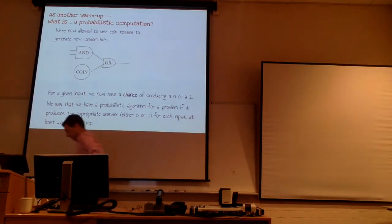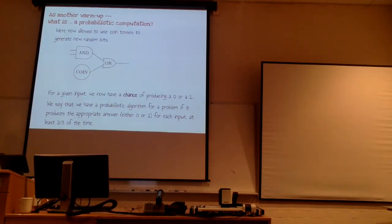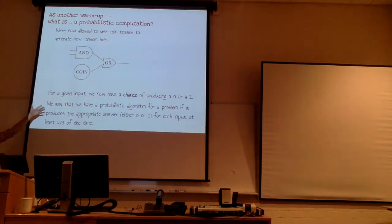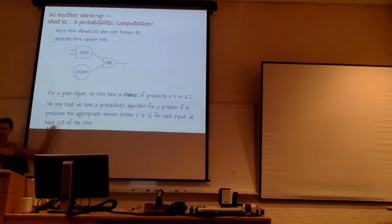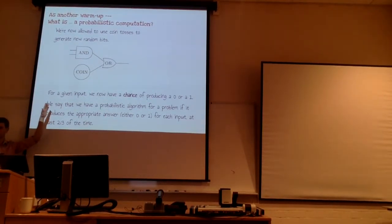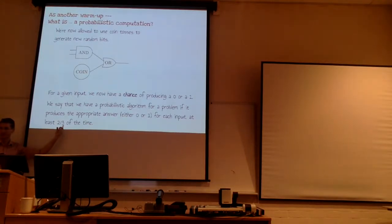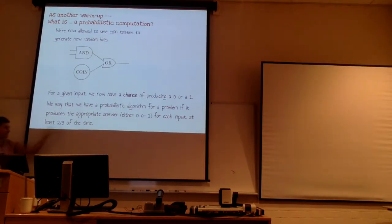The output of a probabilistic circuit is some probability distribution — some percent chance we'll get a zero, some percent chance we'll get a one for a given input. We say we've got a probabilistic algorithm for some problem if our circuit produces the right answer at least two-thirds of the time. Two-thirds isn't very special here; you could put nine-tenths or 99 out of 100. The point is, if you want to be more sure, you can run the same circuit on the same input multiple times and take the majority vote.